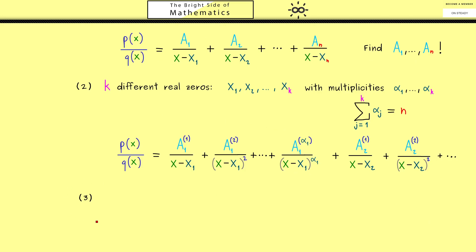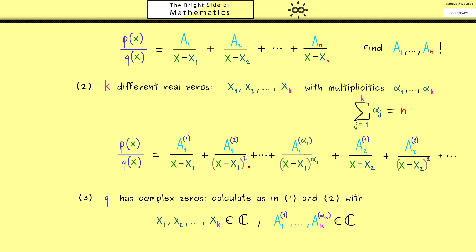Before the example, let me briefly mention the third case: the denominator q has complex zeros. When working with complex numbers you can do all the calculations as with real numbers — the zeros and coefficients become complex numbers. From the calculation side this does not change anything, but the interpretation is different because for a moment we leave the real realm. In the end we have to recombine everything to get a real function back. This will be a topic for another video.